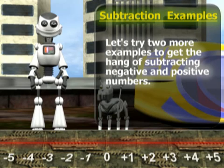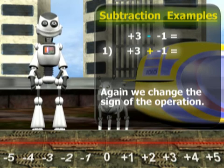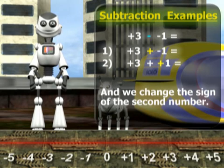Let's try two more examples to get the hang of subtracting negative and positive numbers. Again, we change the sign of the operation. This time from subtraction to addition. And we change the sign of the second number from negative to positive.